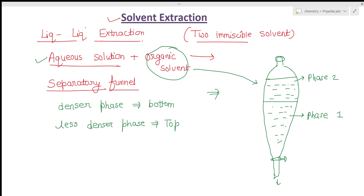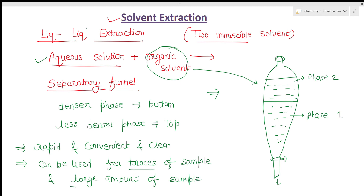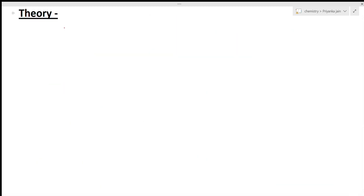The advantages of this method are that it is very rapid and convenient, and you get a clean separation. This technique can be used for traces of sample as well as for large amounts of sample — whether you have a little amount or a large amount, you can use this method.